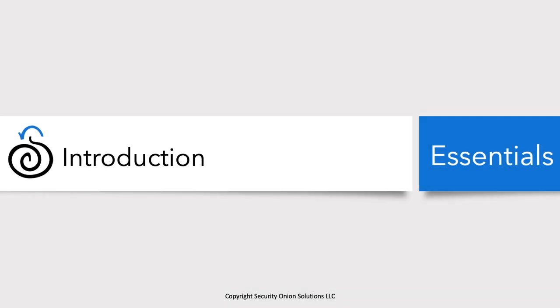Thanks Doug for that introduction. Greetings and welcome to Security Onion Essentials. My name is Josh Brower and I am thrilled to be your instructor for this course. To peel back the layers in your enterprise and make your adversaries cry, you need to have a high level of visibility into your infrastructure and the ability to slice and dice your way around the data that visibility brings.